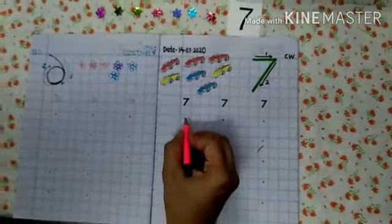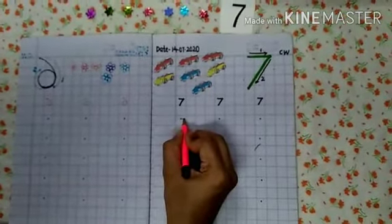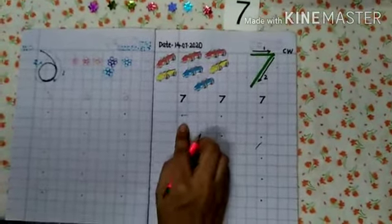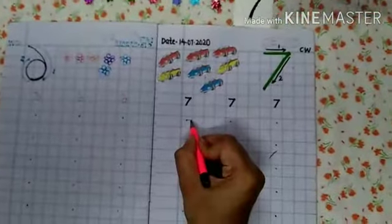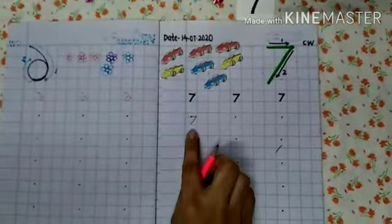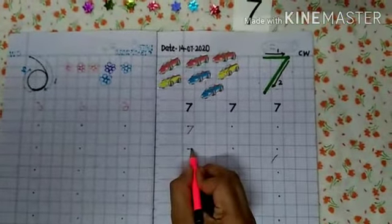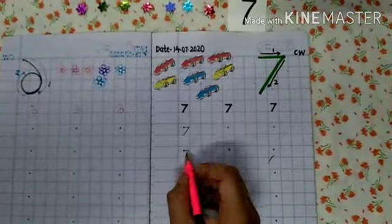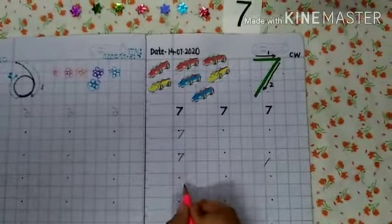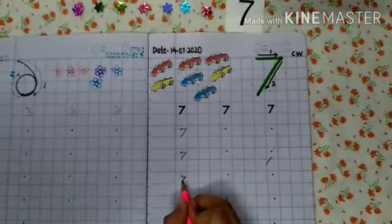So, let's start. Slipping line. Like this. Then, slanting line. Like this. Slipping line. Like this. Then, slanting line. Like this. 7.